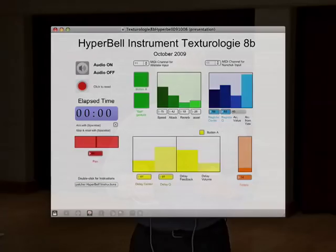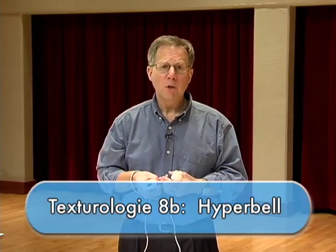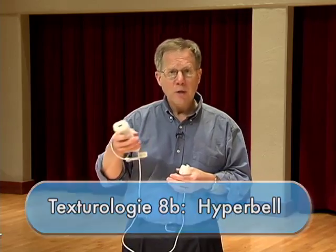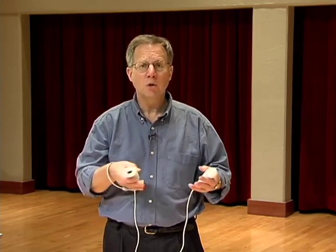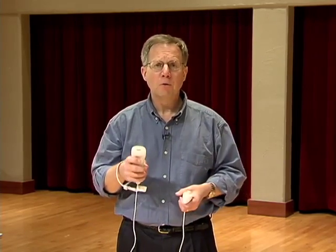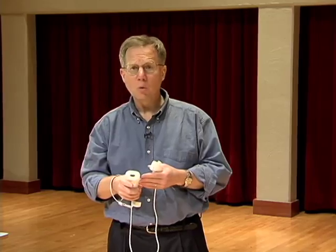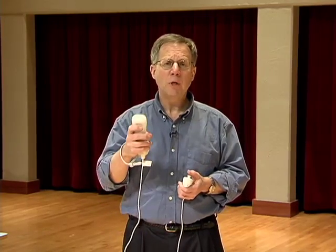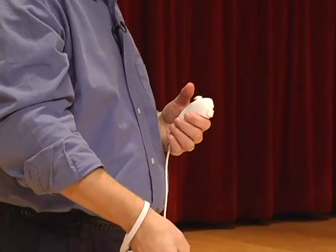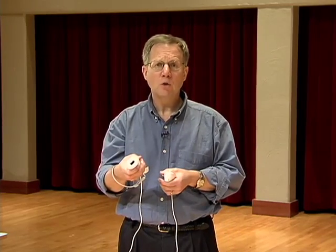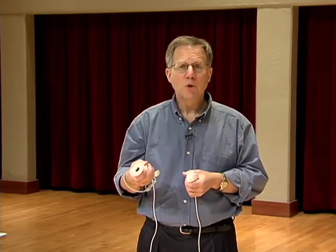In Texturology 8B, Hyperbell, the right hand controls attacks and articulations, while the left hand controls the pitch. This is like a string instrument: a violinist uses the right hand to bow or pluck the strings, controlling durations, articulation, and speed, while using the fingers of the left hand to play higher or lower pitches. In Hyperbell, pressing the B button triggers a flurry of notes. The pitch of the remote — pointing up or down — controls speed. The roll, turning my wrist left or right, controls the articulation, from a more percussive attack to a more gentle articulation.